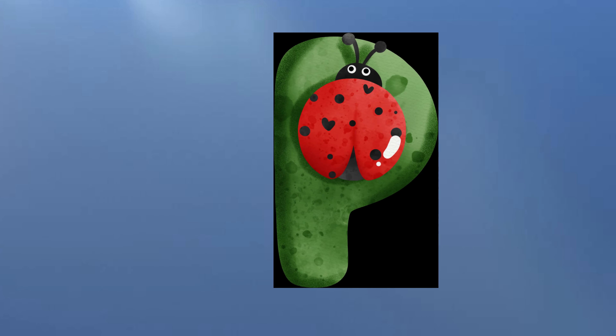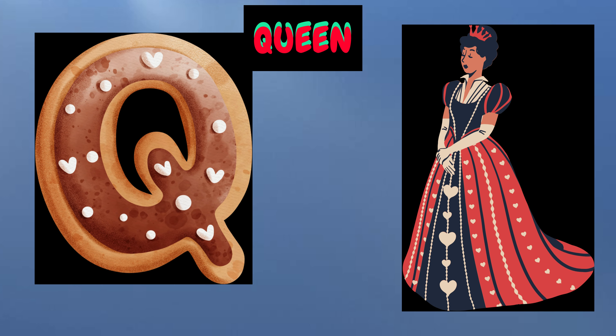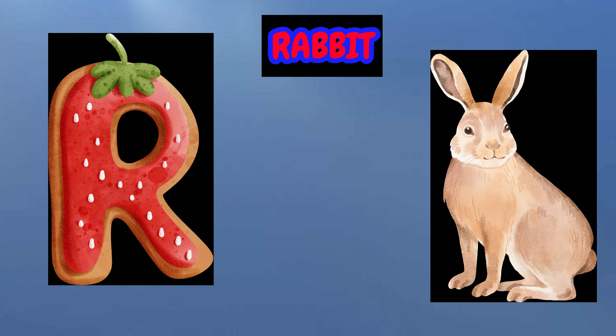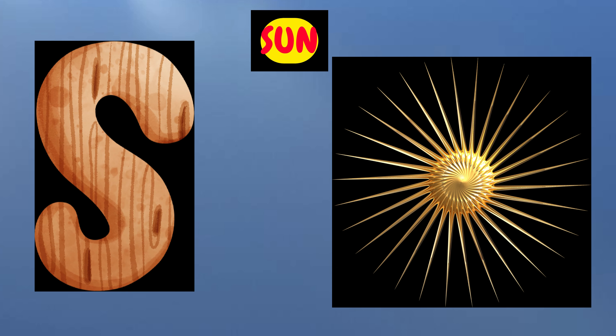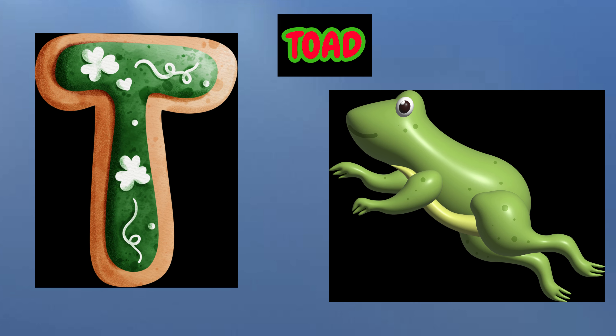P is for Pet, P-P-Pet. Q is for Queen, Q-Q-Queen. R is for Rabbit, R-R-Rabbit. S is for Sun, S-S-Sun. T is for Toad, T-T-Toad.